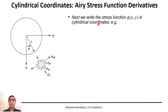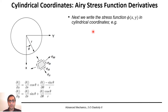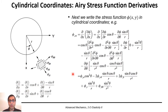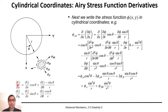So we have to write the stress function phi in cylindrical coordinates. We have already seen partial derivatives with respect to Cartesian coordinates expressed in cylindrical coordinates r and theta. We basically try to write the partial derivatives of phi with respect to x, y, and z, this time with respect to r and theta using these relations. Pay attention that we have two times differentiation with respect to x, for example, so we have to implement partial/partial_x with respect to r and theta twice.